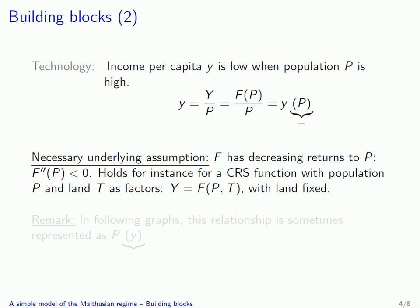So f''(p) is smaller than zero — we have a concave production function. This holds, for instance, for a constant returns to scale function that takes two factors of production as inputs, for instance, population p and land t. Once land is fixed, you automatically get a production function that exhibits decreasing returns to scale with respect to population.